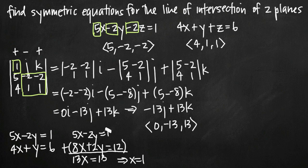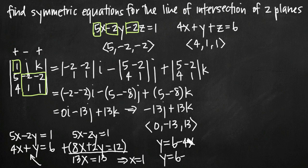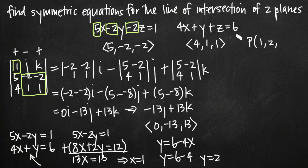Now we plug x equals 1 back into the second equation. Subtracting 4x from both sides gives y equals 6 minus 4x. Substituting x equals 1, we get y equals 6 minus 4, which is 2. So y equals 2. We now have x equals 1, y equals 2, and z equals 0, giving us the point (1, 2, 0). This is a point that lies on the line of intersection of the two planes.